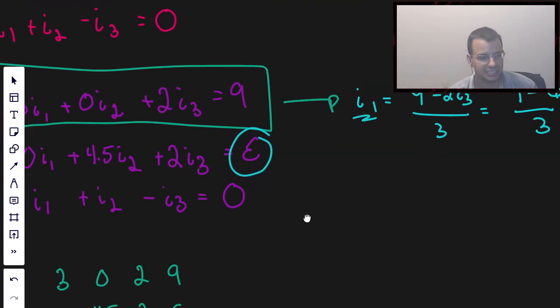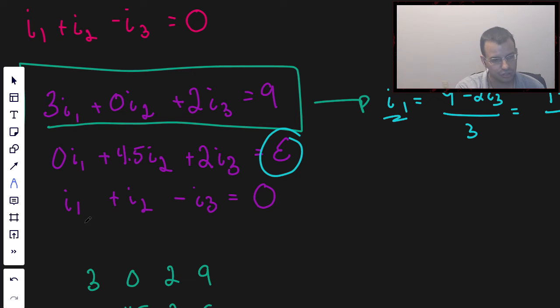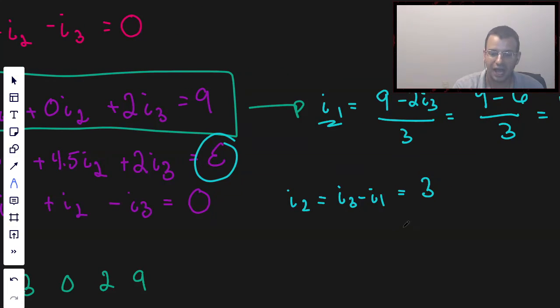Now we can go down to the third part, third equation. I2 equals I3 minus I1. I3 is 3A, we know that. I1 is 1A, we just found that. So I2 is 2A.